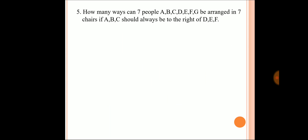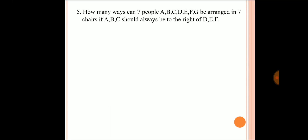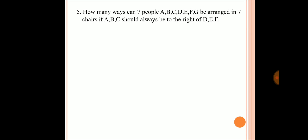Next question: how many ways can seven people A, B, C, D, E, F, G be arranged in seven chairs if A, B, C should always be to the right of D, E, F? Without any condition, seven people in seven chairs can be arranged in seven factorial ways. The condition that A, B, C should always be to the right of D, E, F means these six people are behaving identically to each other.